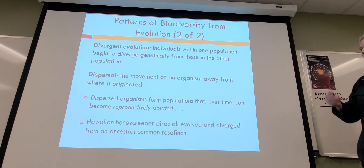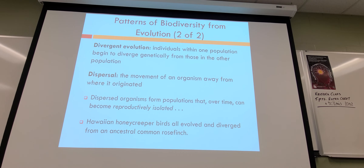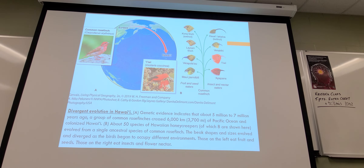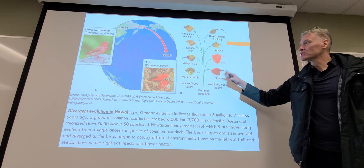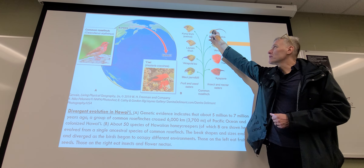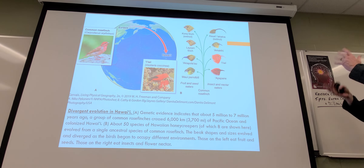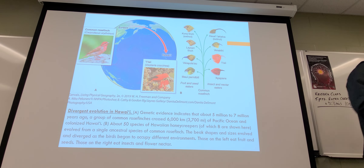Divergent evolution is what it sounds like. Dispersal is organisms spreading out around the planet to any place they can reach. Here's the example I was looking for: you could start with one specific type of species, and it differentiates based on what specific food it goes for. Long-billed ones tend to go after flowers; those with a harder beak tend to go after insects. This way both varieties can coexist because they don't compete — one is eating bugs, one is going after flowers, and they both have their own niche.